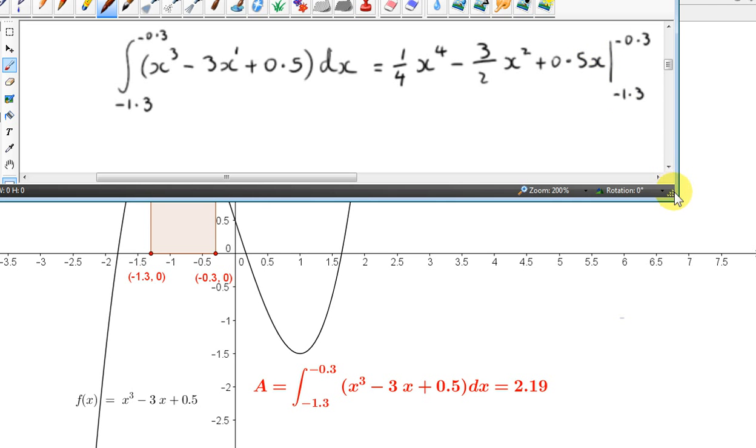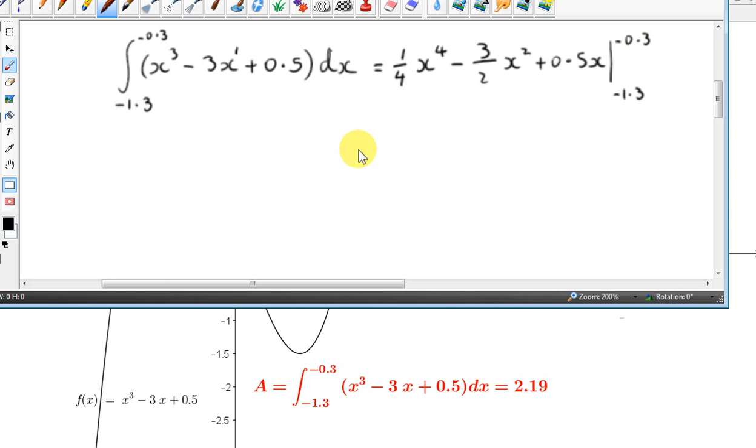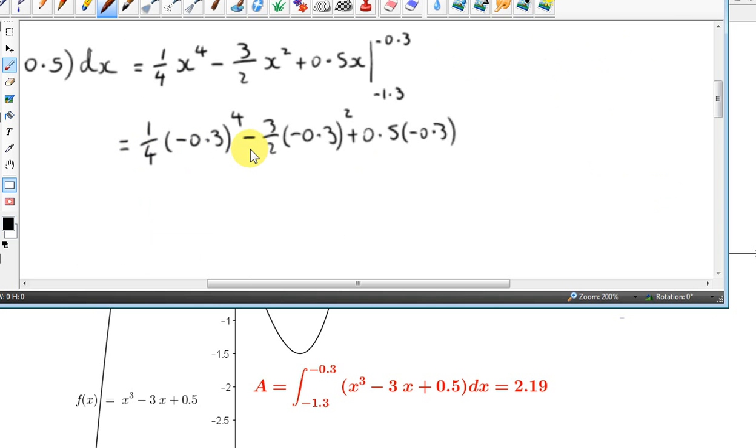Then we apply our limits, as we saw in the previous video. So we have to plug the upper limit minus 1.3 in for x in all of this expression. So this is what we get. And then we put down a minus sign. And in brackets, we write out all of this expression with the lower limit minus 1.3 in for x.